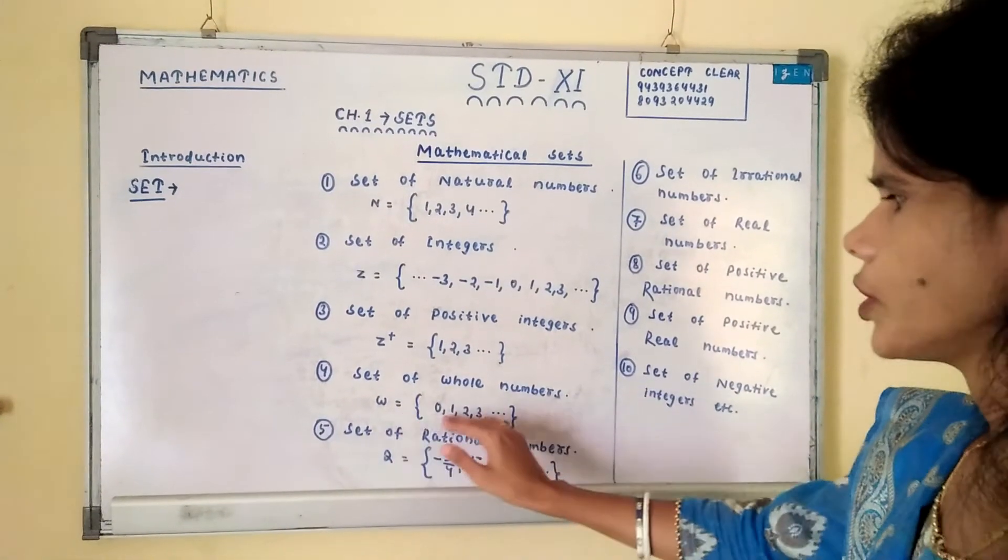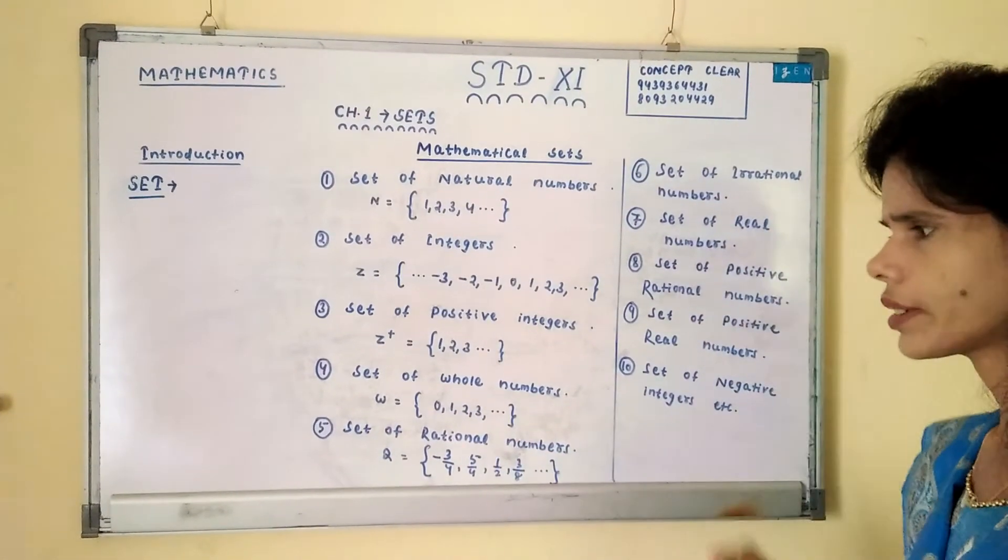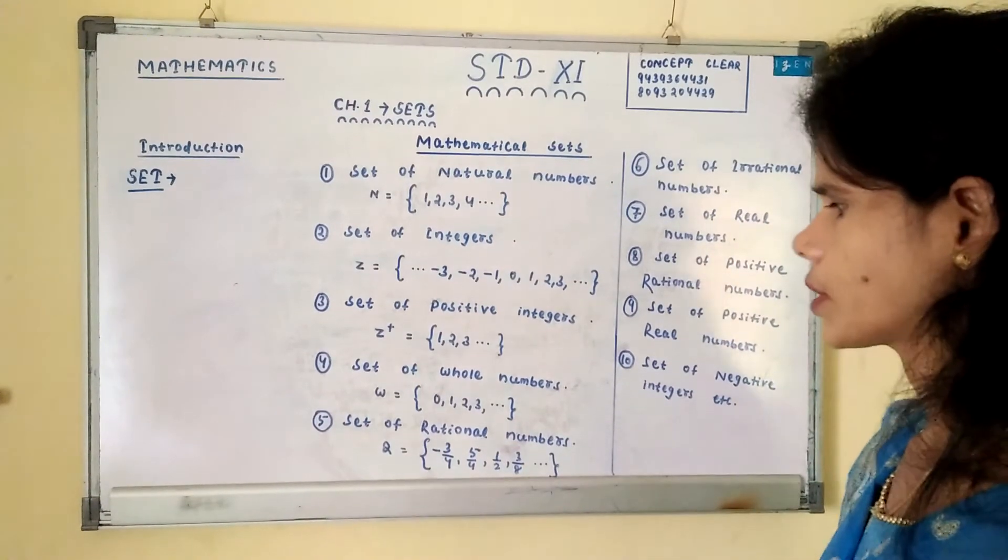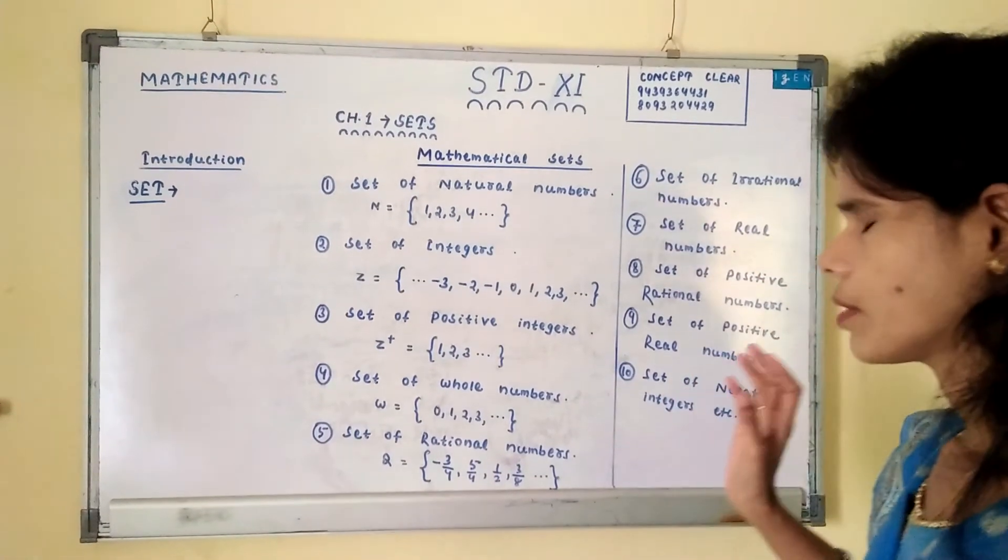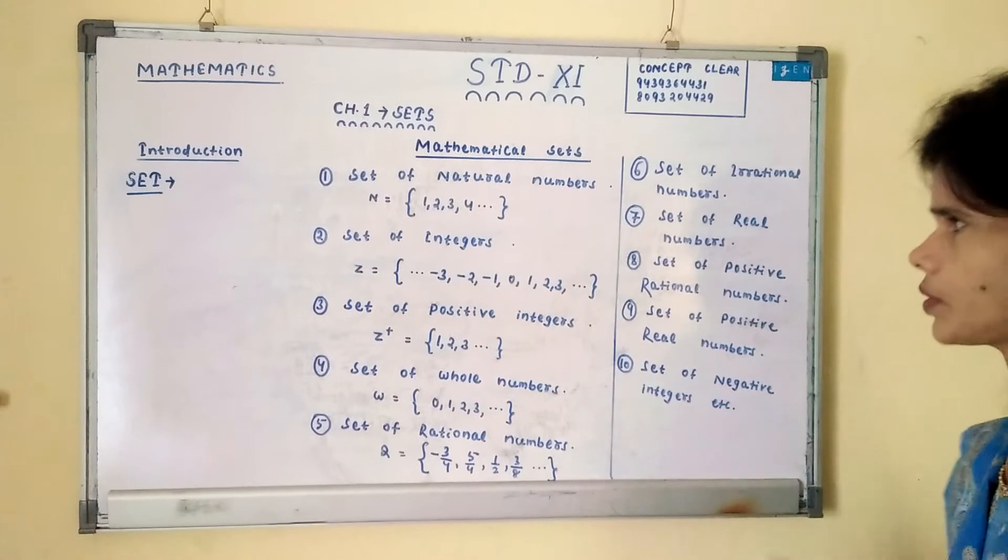Set of whole numbers W is equal to 0, 1, 2, 3, etc. And set of rational numbers: p by q form, includes negative and positive also.